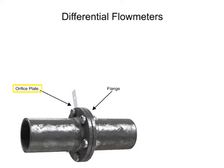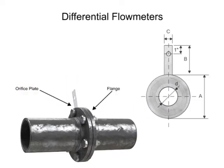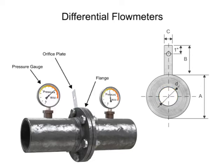The orifice plate of the flow meter is comprised of a circular metal disk with a specific hole diameter that reduces the fluid flow in the pipe. Pressure taps are added on each side of the orifice plate to measure the pressure differential.